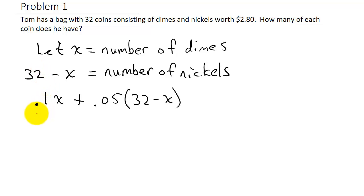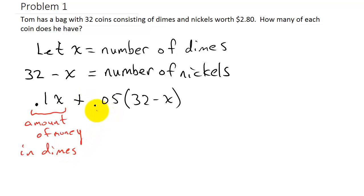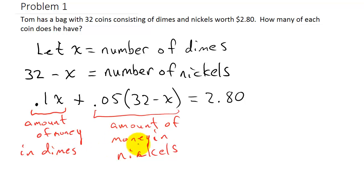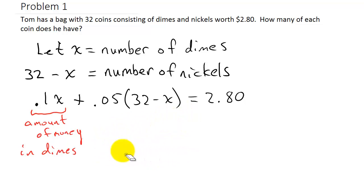So the equation is: 0.1x (amount of money in dimes) plus 0.05 times (32 minus x) (amount of money in nickels) equals 2.80, the total amount of money.